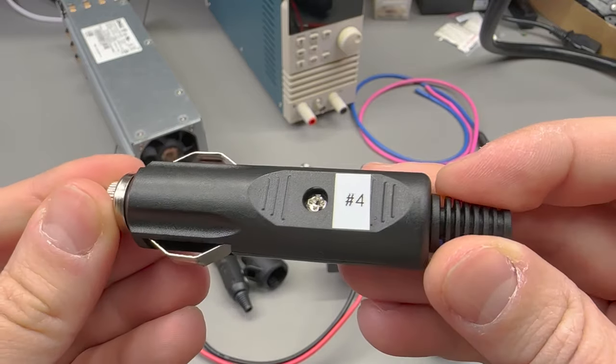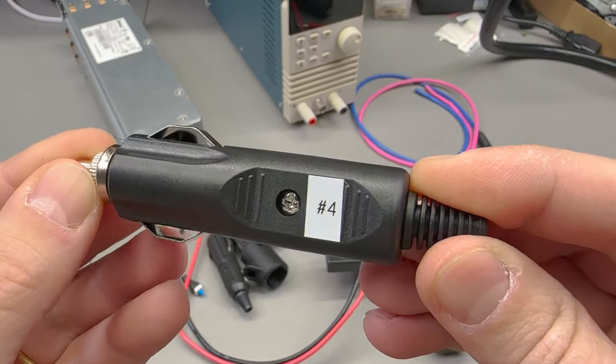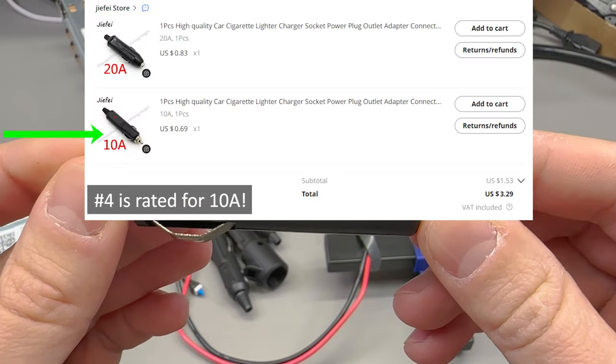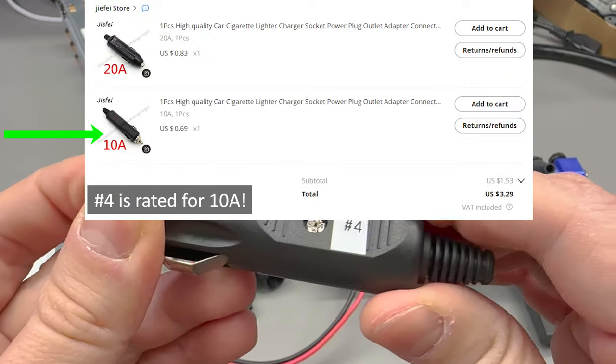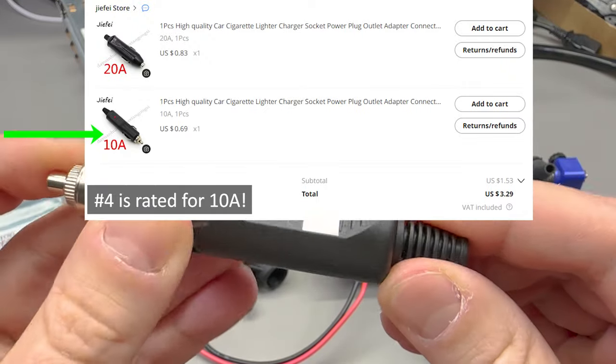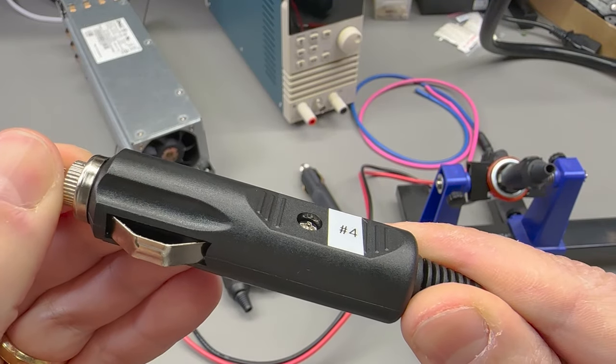From the same seller on AliExpress I got connector number four. This one looks very similar to connector number one, so that's why I have them labeled. This one is rated for 20 amps and has visibly a different shape and feels like a different material for the plastic.